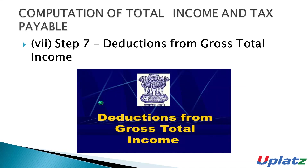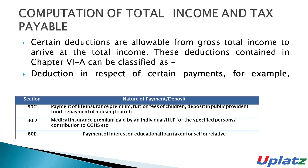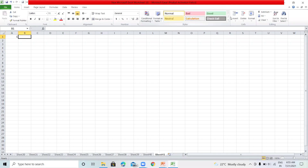Step number seven is deductions from gross total income. After calculating the gross total income in step six, we will provide a reduction from gross total income. We will provide the reduction from gross total income just like deduction under Chapter 6A. For example, consider assessee Mr. Ram.